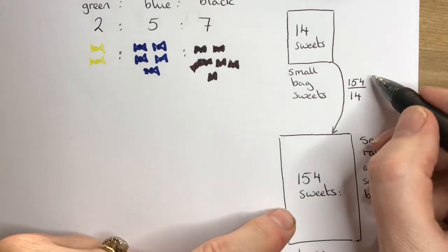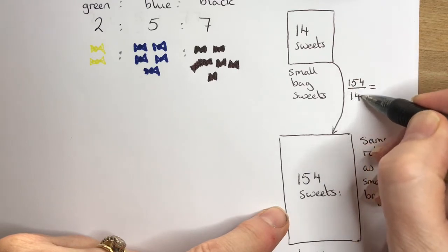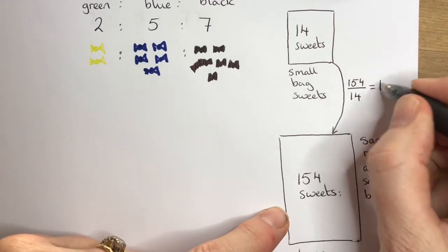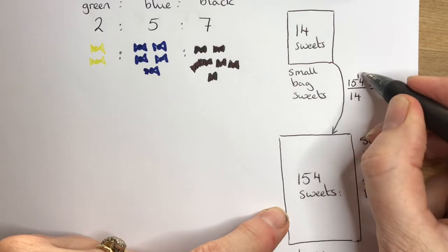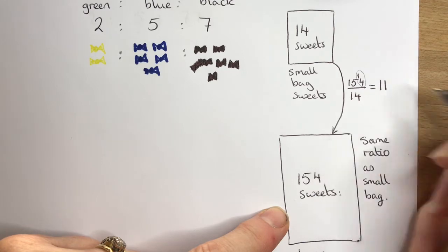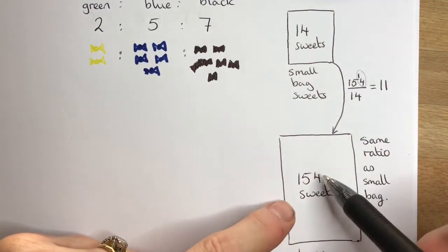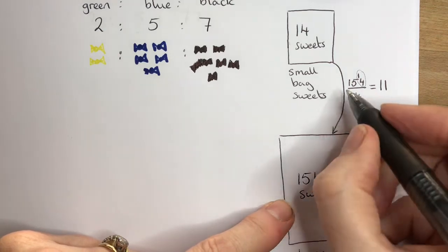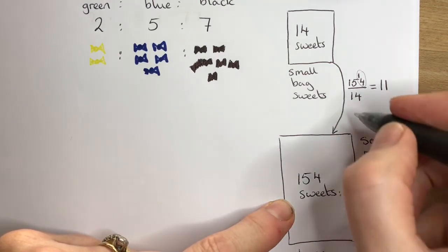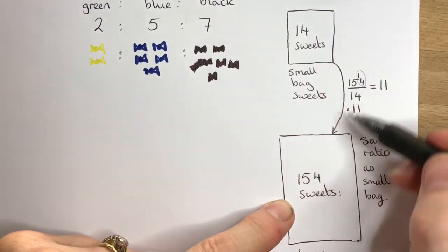Can we do this without a calculator? Yes we can. In short division, 15 divided by 14 goes one time, there's one left over. We move that over and we're now looking at 14, which divided by 14 is one. So we're multiplying 14 by 11 to get 154 sweets, so we're multiplying by 11 to go from a small bag to a large bag.